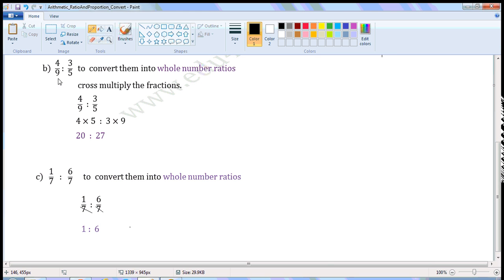Next ratio: 4/9 is to 3/5. Now, to convert them into whole number ratios, we will use the second method, that is, cross-multiplying the fractions.